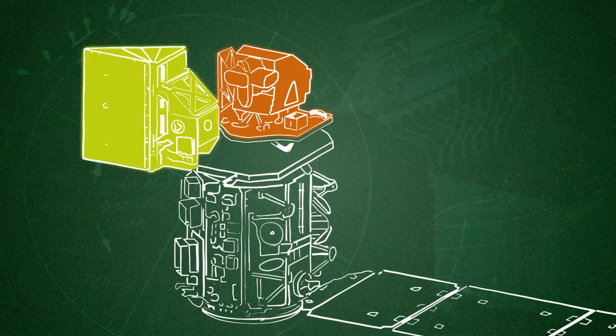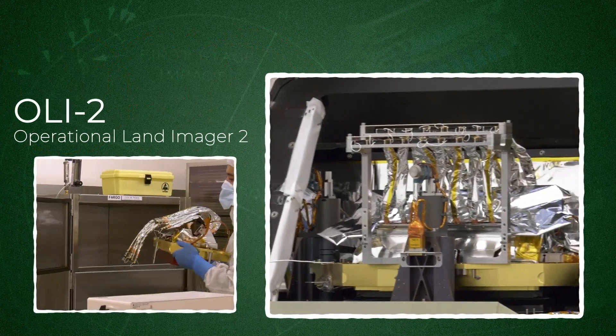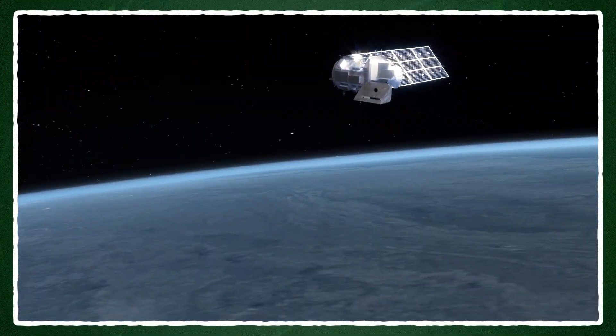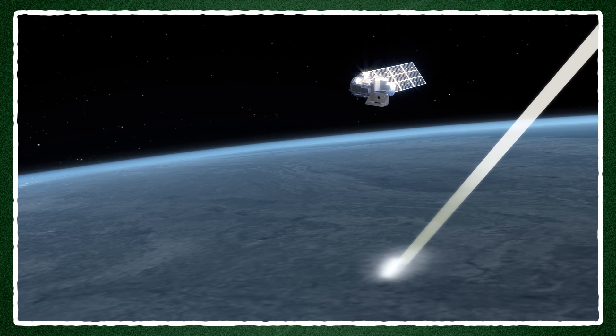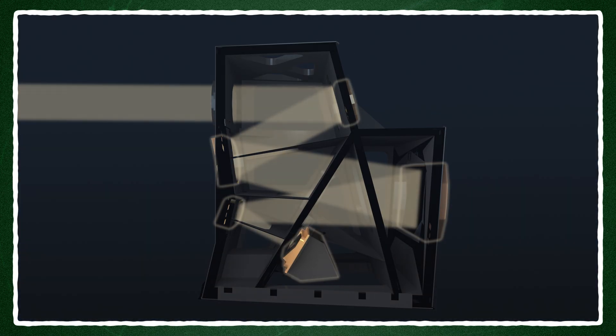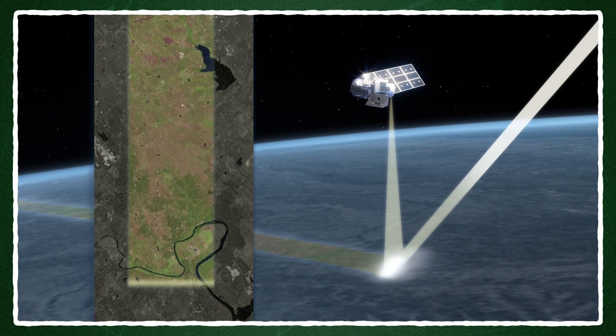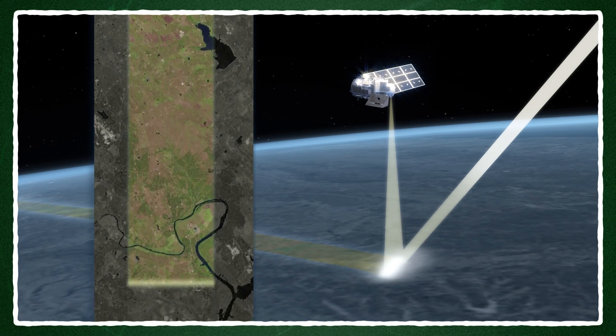There are two instruments aboard Landsat 9. OLI-2 is all about light. Once in orbit, OLI-2 collects sunlight reflected off Earth's surface. The light passes through a set of filters to separate out nine specific wavelength bands, invisible and infrared frequencies. Each band provides different pieces of information about what is down on the surface.